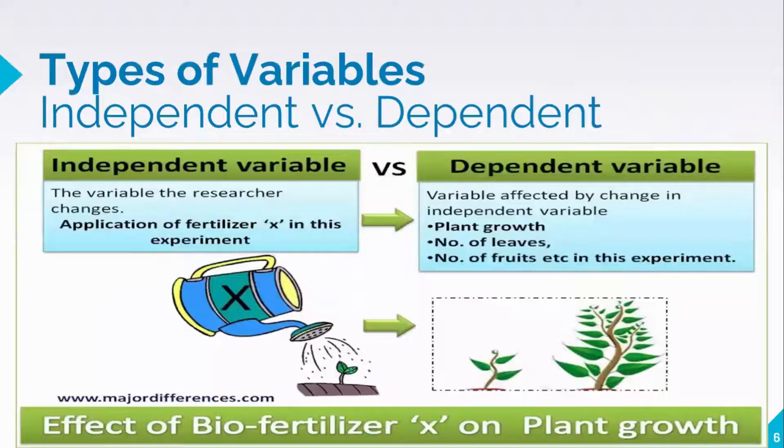Types of Variables. Independent versus Dependent Variable. If a variable is manipulated such that its values are chosen and set by the researcher, it is called an independent variable. Its value is independent of the behavior of the subject.